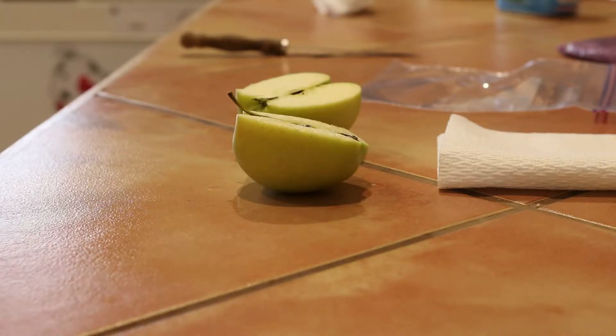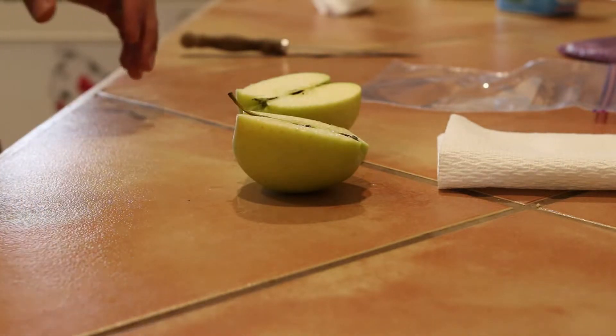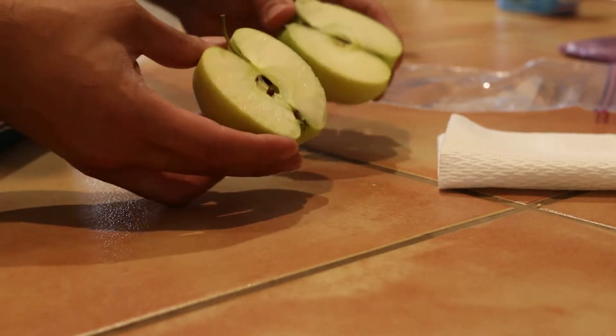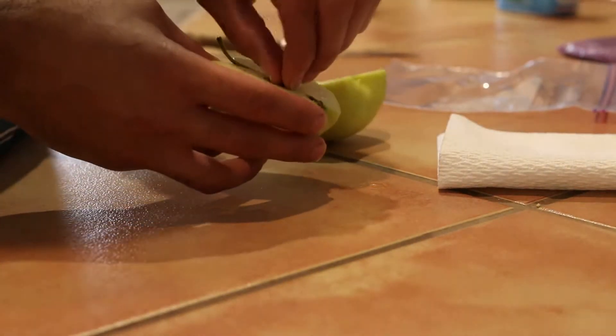Alright, let me show you how you can have your own apple tree from your own seeds. The first thing you need is an apple. You want to cut it in half and extract the seeds.